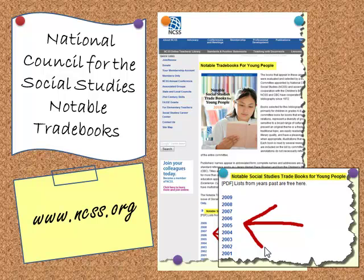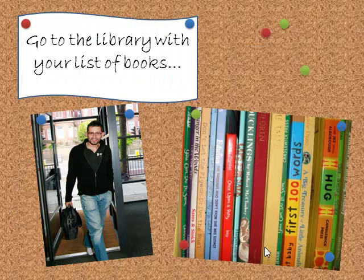First, you will need to select a book. Go to the National Council for the Social Studies website at ncss.org. Once you are there, click on Resources and then select Notable Trade Books for Young People. A PDF of the most recent list is available to members only. If you are not a member, I encourage you to join this organization, but even if you don't, you will be able to view the list from years past — just click on the year you would like to view. The most difficult part of this project will be selecting just one book. You might want to print out this list or jot down your top selections, because it's off to the library we go.